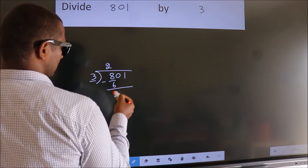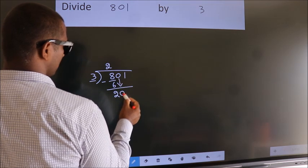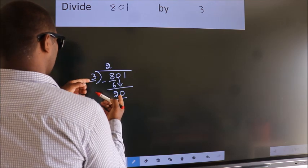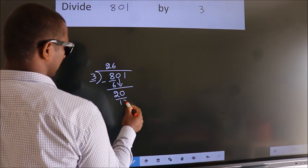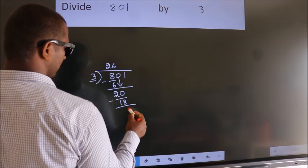After this, bring down the beside number. So, 0 down. So, 20. A number close to 20 in the 3 table is 3 times 6, which is 18. Now we subtract. We get 2.